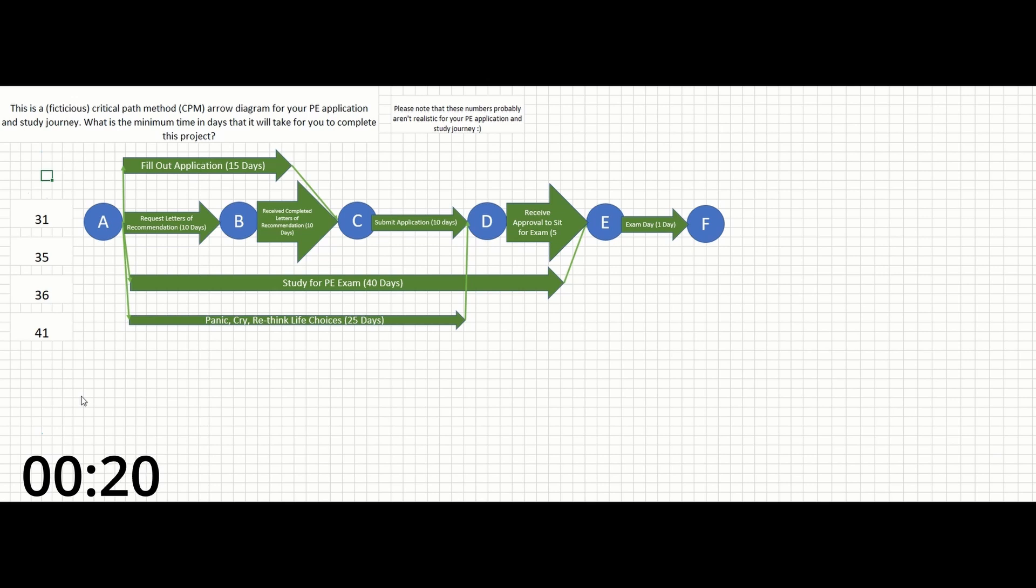A critical path is simply the sequence of stages that are needed to determine what the minimum amount of time is required to complete the project on schedule. In this case, it's actually about identifying the longest period of time identified among each of these path options.